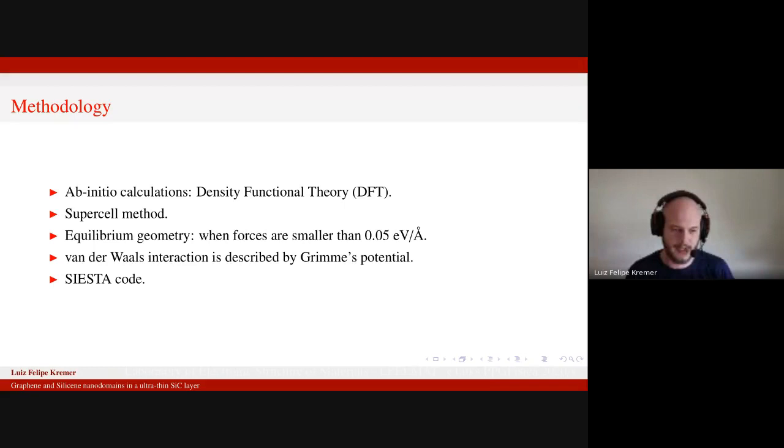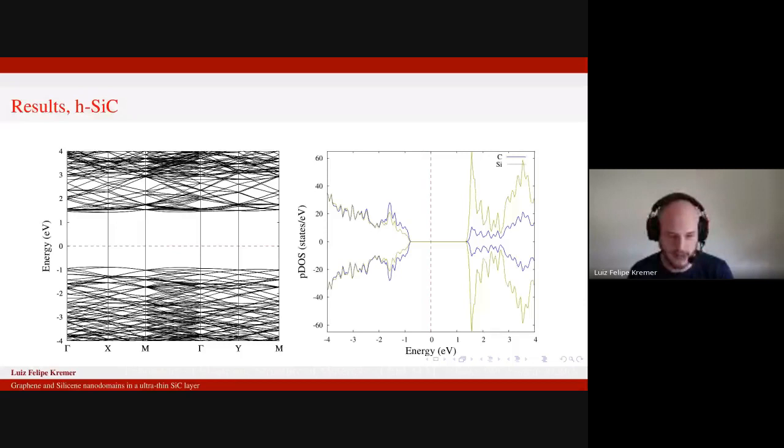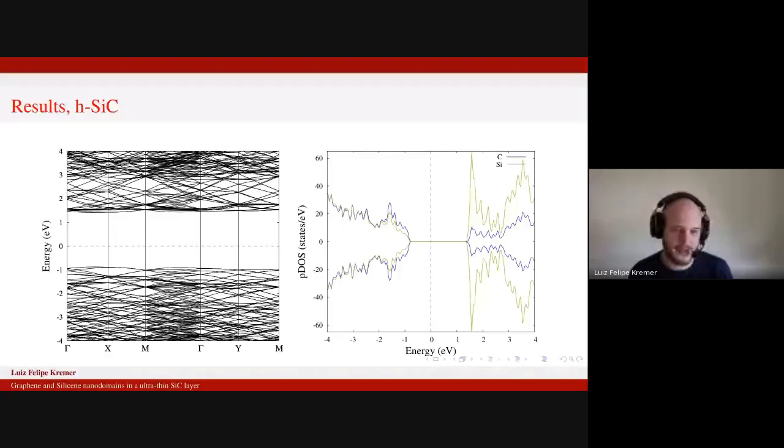So here we have an example optimized structure of the H-SiC layer. As you can see, we used a 160 atom cell and it really stays flat. Calculating the band structure of the material on the left, going from the first Brillouin zone, we also see that it has the character of bulk silicon carbide and it's a wide band gap semiconductor.